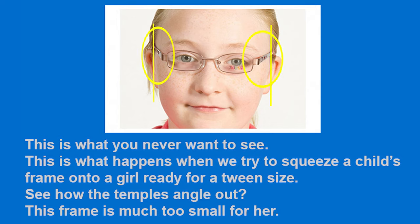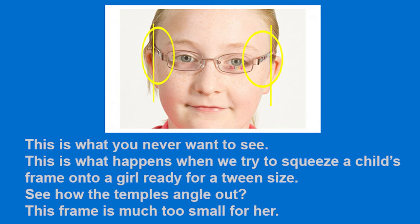This is what you never want to see. This is what happens when we try to squeeze a child's frame onto a girl ready for a tween size. See how the temples angle out? That frame is much too small for her. This is a great image. If you look close, you can see that the spring hinge is open. This means that the frame is too small for her. A spring hinge has nothing to do with fit.